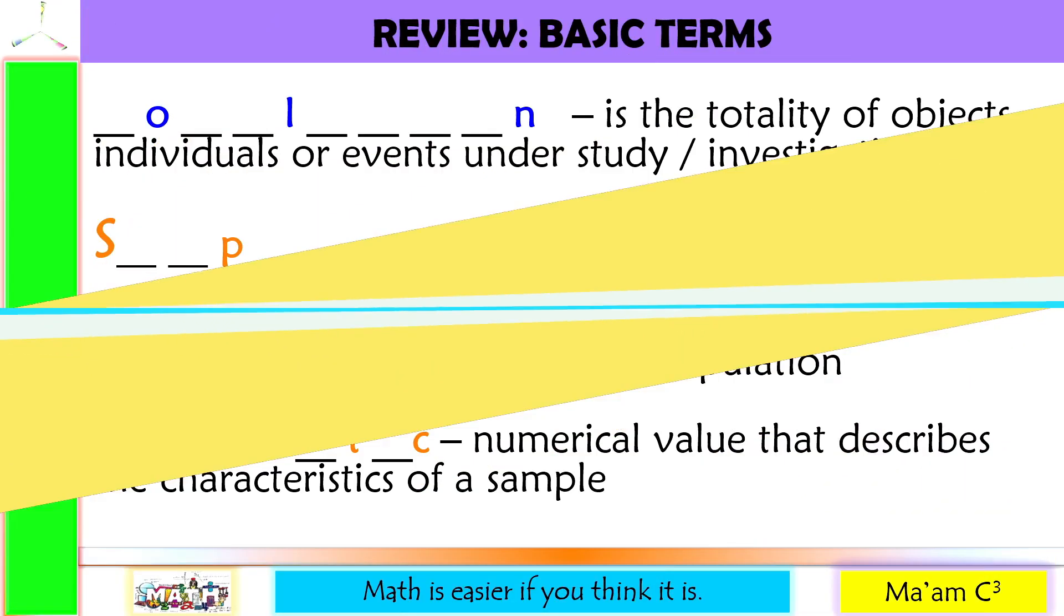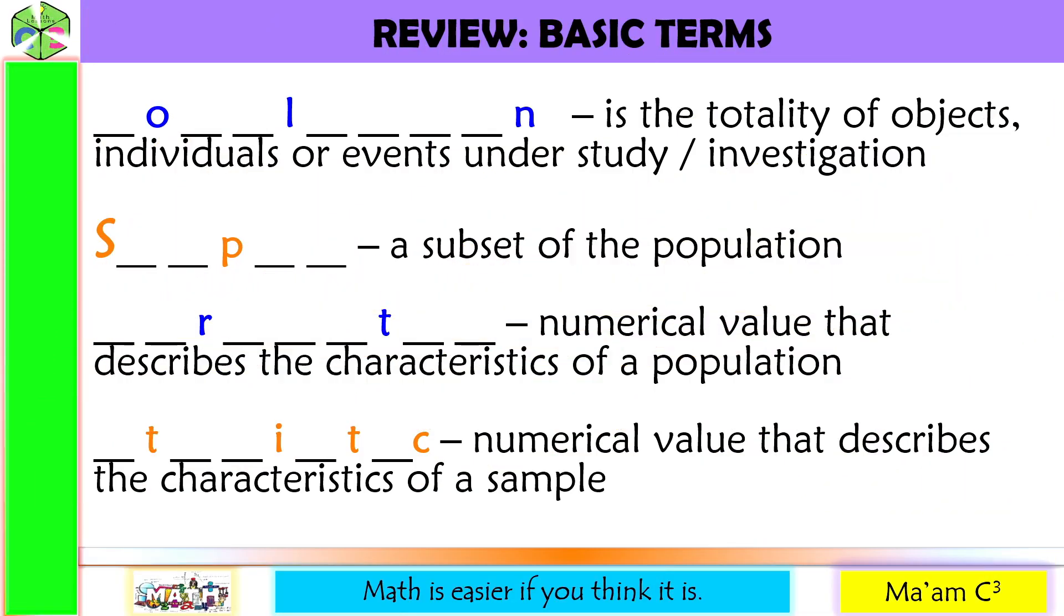Let's have a quick review. Let us identify the following. Number one, it is the totality of objects, individuals, or events under study or investigation. We call this population.